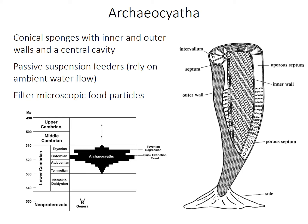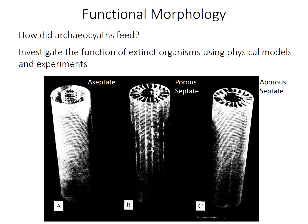We'll start with a group of conical sponges called archaeocyaths. They were common and important reef builders during the early Cambrian, and like other sponges, were likely passive suspension feeders that filtered tiny plankton particles for food. Passive suspension feeders rely on water currents in their environment rather than actively generating their own water flow. The question is: how did archaeocyaths feed? What's the importance of the central cavity, the septa — the vertical walls dividing their body — and the small pores the septa sometimes contain?